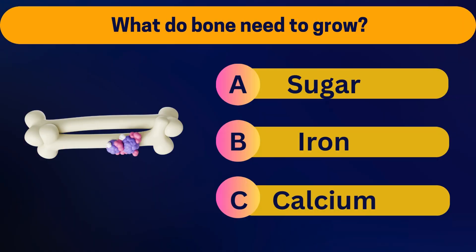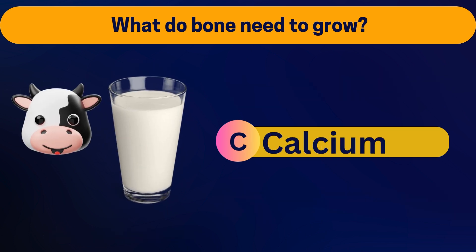What do bones need to grow? Sugar, iron, or calcium? Calcium. You can find it in milk, for example.